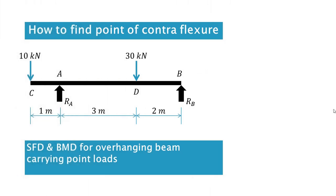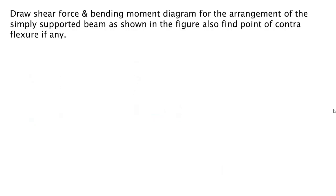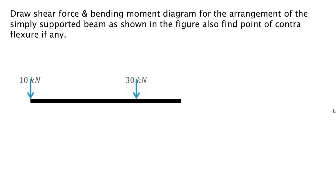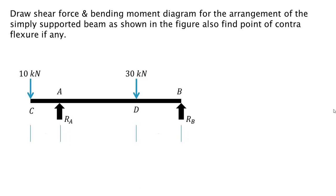In this video we'll see how to find out the point of contraflexure in case of a simply supported beam carrying point loads. The arrangement of the beam is as shown in the figure. We have point loads of 30 kilonewton and 10 kilonewton. The total length of the beam is 6 meters — that is 3 plus 2 plus 1 — and it has a left hand side overhang of 1 meter.